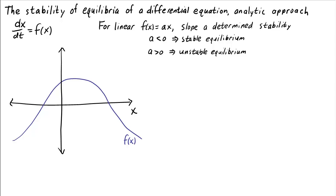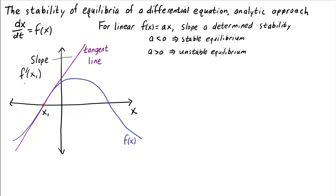We simply have to remember that stability is a local property. To determine the stability of a particular equilibrium, all we care about is the local behavior of f around that equilibrium, which is well captured by its tangent line. So for a particular equilibrium x1, the slope of the tangent line is the derivative of f evaluated at x1, and it's this slope that determines the stability of x1. In this example, f prime of x1 is positive, implying x1 is unstable — f is positive to the right and negative to the left, so the solution moves away from the equilibrium.